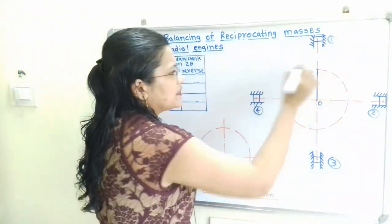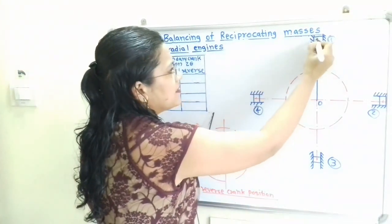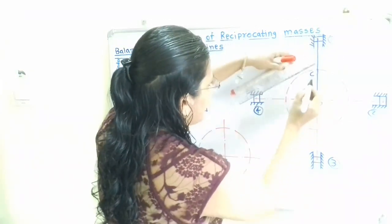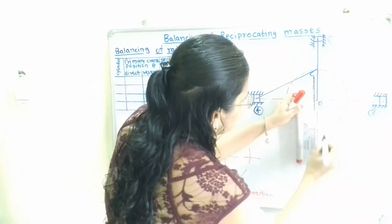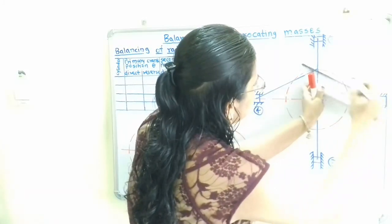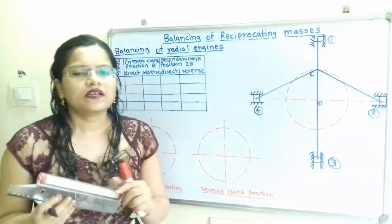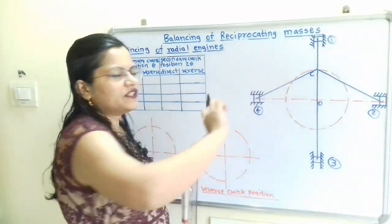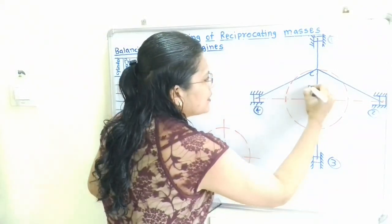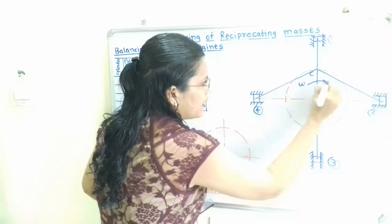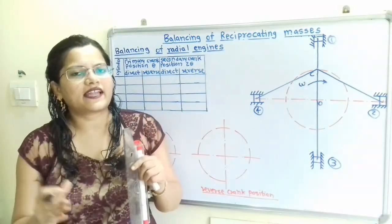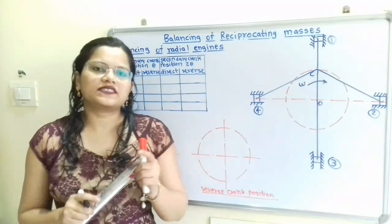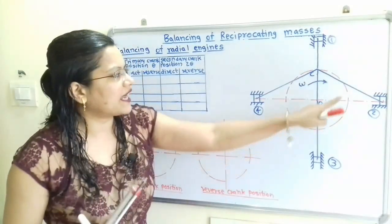This is the crank OC. We connect the middle point of these cylinders — the piston-cylinder arrangement — to the common point C, joining all points to the crank pin C. We will consider this crank OC rotating in the clockwise direction, showing angular velocity omega as clockwise. For the Direct Crank method, angles rotate in the clockwise direction; for the Reverse Crank method, the opposite anticlockwise direction is used.